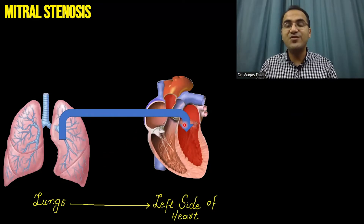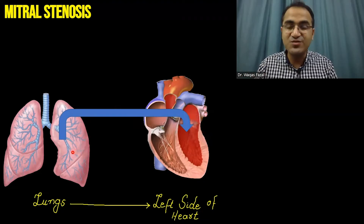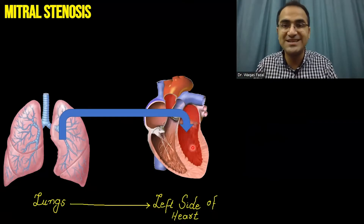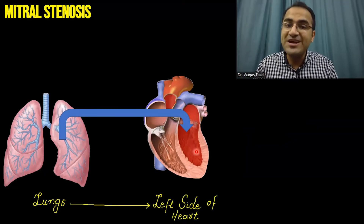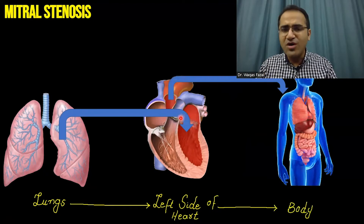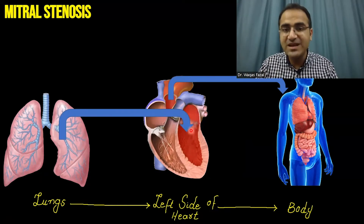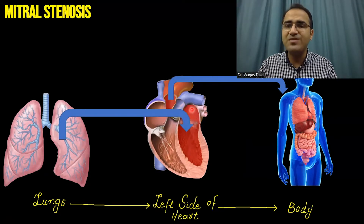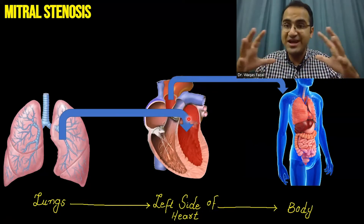As we discussed in our heart failure video, the left side of the heart receives blood from the lungs. From the lungs, blood enters the left atrium, then crosses the mitral valve into the left ventricle, which pumps it through the aorta to the whole body. If there is mitral stenosis, there will be difficulty for blood to enter from the left atrium to the left ventricle, so blood will be backed up in the left atrium and the left atrium size will increase — there will be left atrial enlargement.